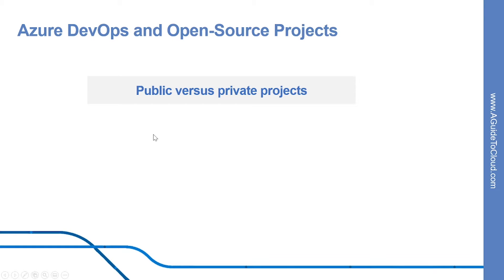Let us discuss what is public versus private projects. Projects in Azure DevOps provide a repository for source code and a place for a group of developers and teams to plan, track progress, and collaborate on building software solutions. One or more projects can be defined within an organization in Azure DevOps.